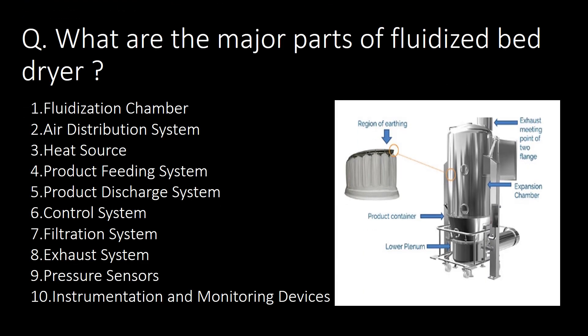What are the major parts of a fluidized bed dryer? The major parts are: fluidization chamber, air distribution system, heat source, product feeding system, product discharge system, control system, filtration system, exhaust system, pressure sensors, and instrumentation and monitoring devices.